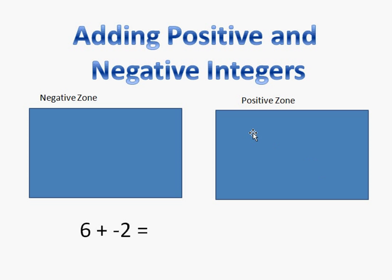I have a negative zone and a positive zone. The negative zone is where my negative numbers go, and the positive zone is where my positive numbers go. When I have matching numbers in my negative and positive zone, they cancel each other out and equal zero. So if I walk one step forward and then one step back, that equals zero, because I'm right back to where I started. We have to keep that in mind as we move forward adding positive and negative numbers.